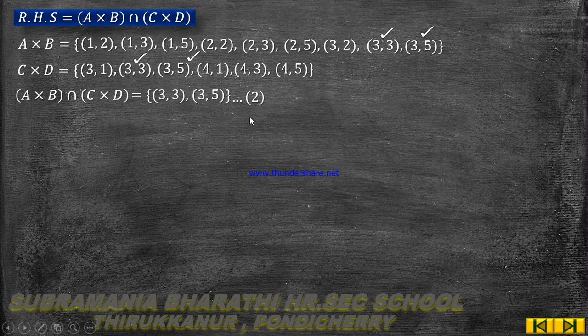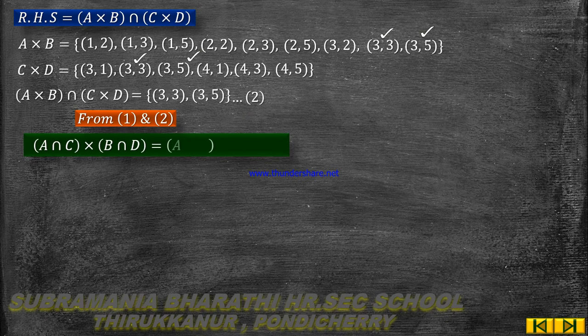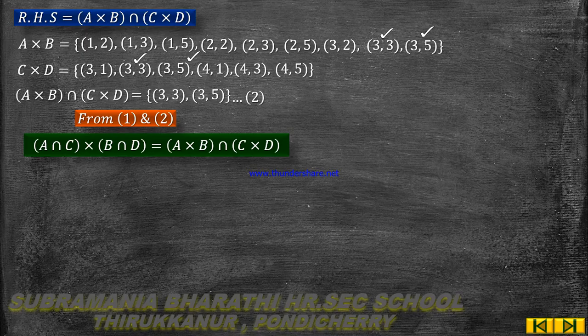From equations 1 and 2, LHS = RHS. That is, (A∩C) × (B∩D) = (A×B) ∩ (C×D). Hence shown.